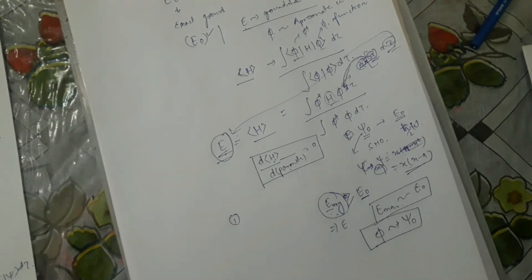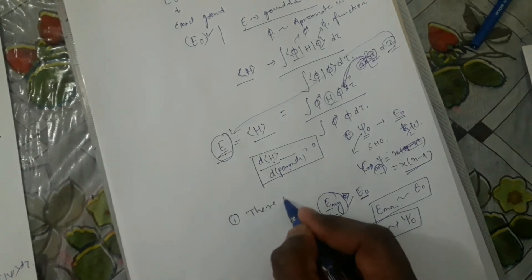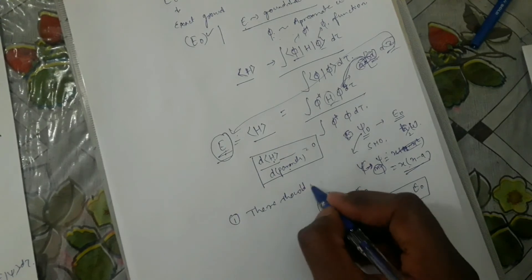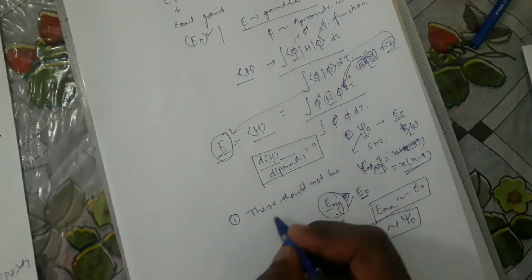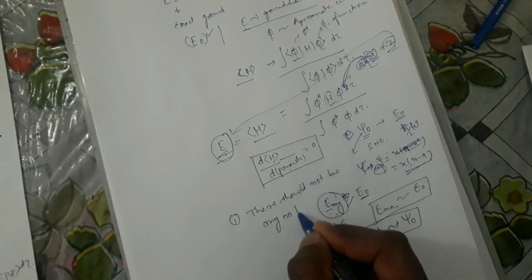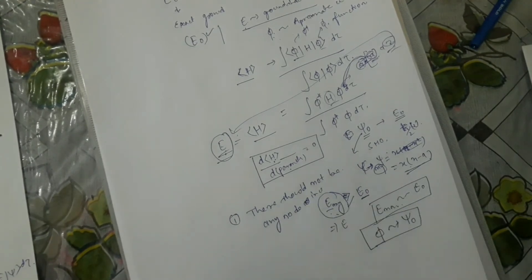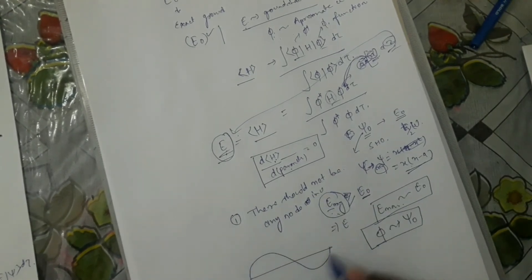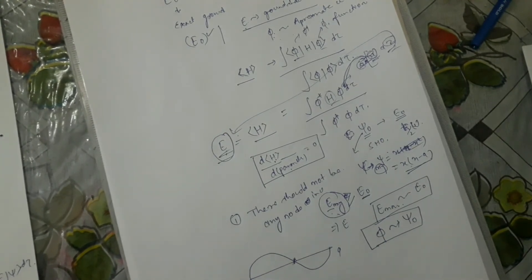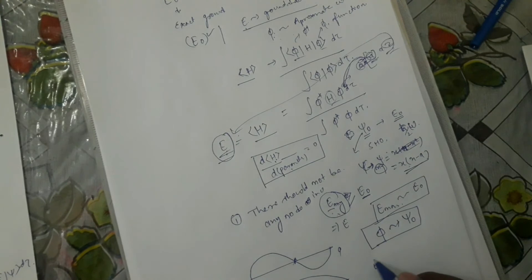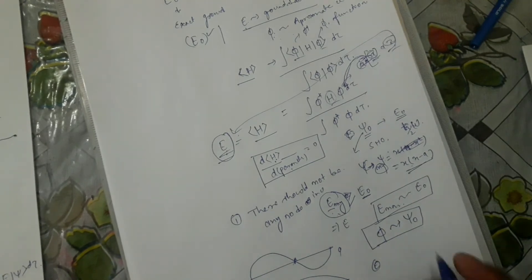The condition here is that there should be no node in the wave function. If the wave function has a node — going to zero in the middle — that is not acceptable. Without a node, the wave function behaves smoothly. That is why we use this variational method mainly for the ground state.